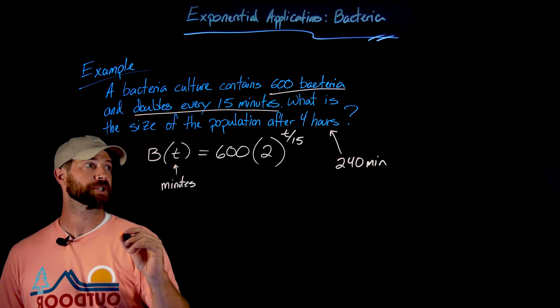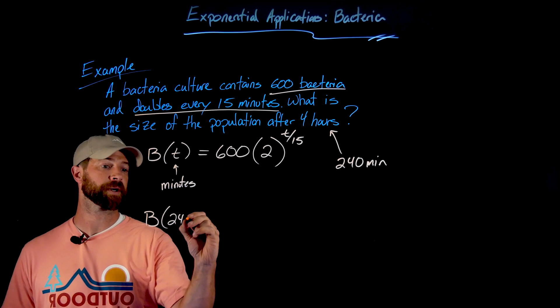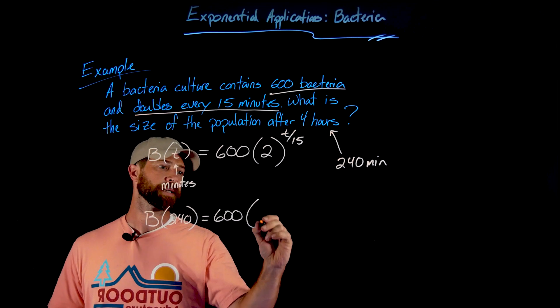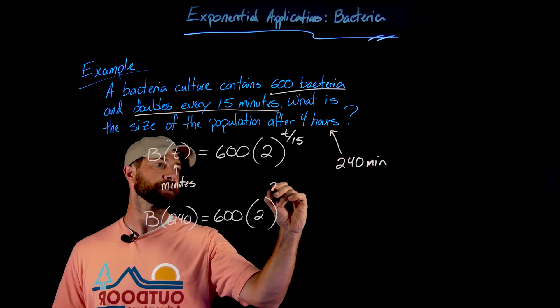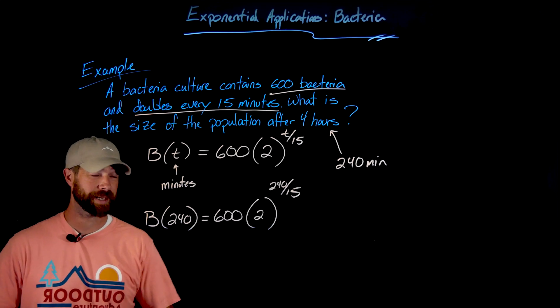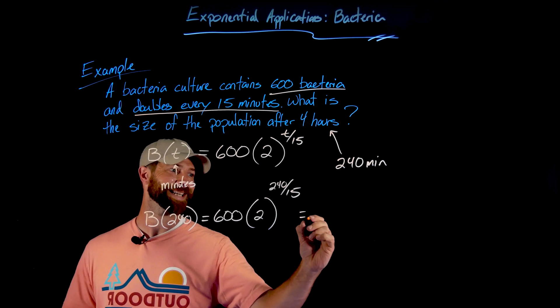So to find out the population after four hours, what I would do is plug in 240 into this function. So I get 600 times 2 raised to the 240 divided by 15. And you might guess what 240 divided by 15 is—it's 16.